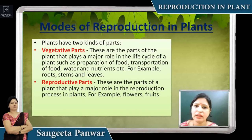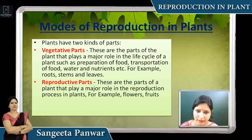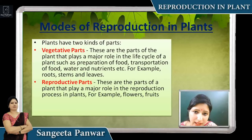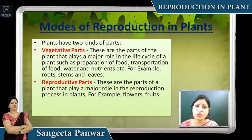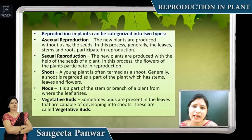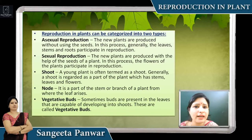In this part we discuss the modes of reproduction in plants. Plants have two kinds of reproduction. The reproductive part includes flower and fruit — flowers have male and female gametes present which are very necessary for reproduction. The vegetative part includes all parts other than flower and fruit, like stem, branches, leaves, and twigs. In plants, reproduction is divided into two categories: sexual reproduction and asexual reproduction.